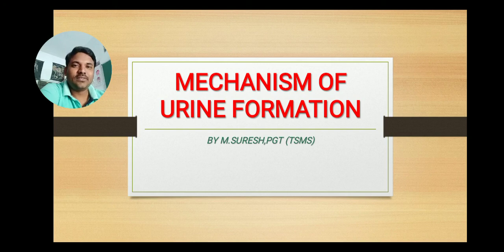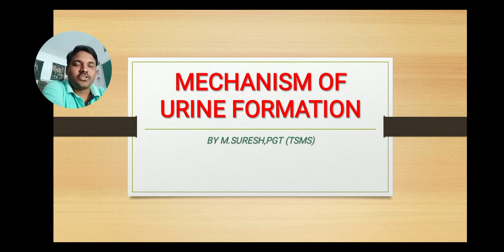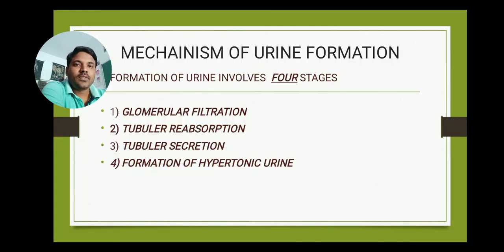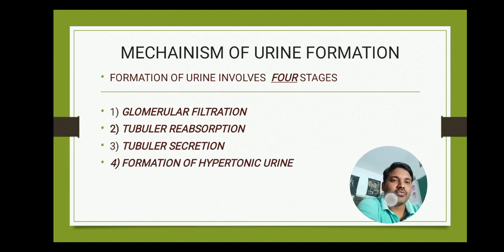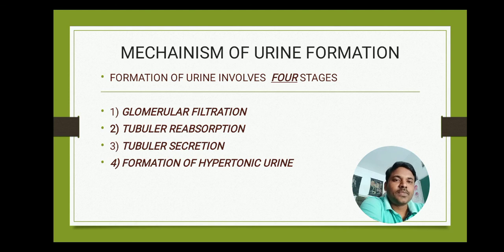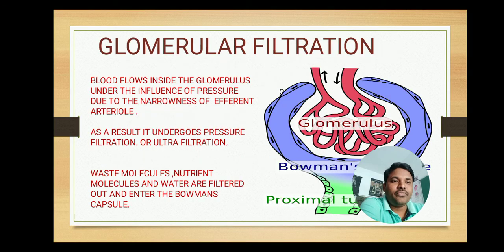Hello students, myself Suresh, welcoming you to this small session. In this session we are going to see the mechanism of urine formation. The mechanism of urine formation involves four stages: glomerular filtration, tubular reabsorption, tubular secretion, and the last step is formation of hypotonic urine. Let us start with the first step, glomerular filtration.